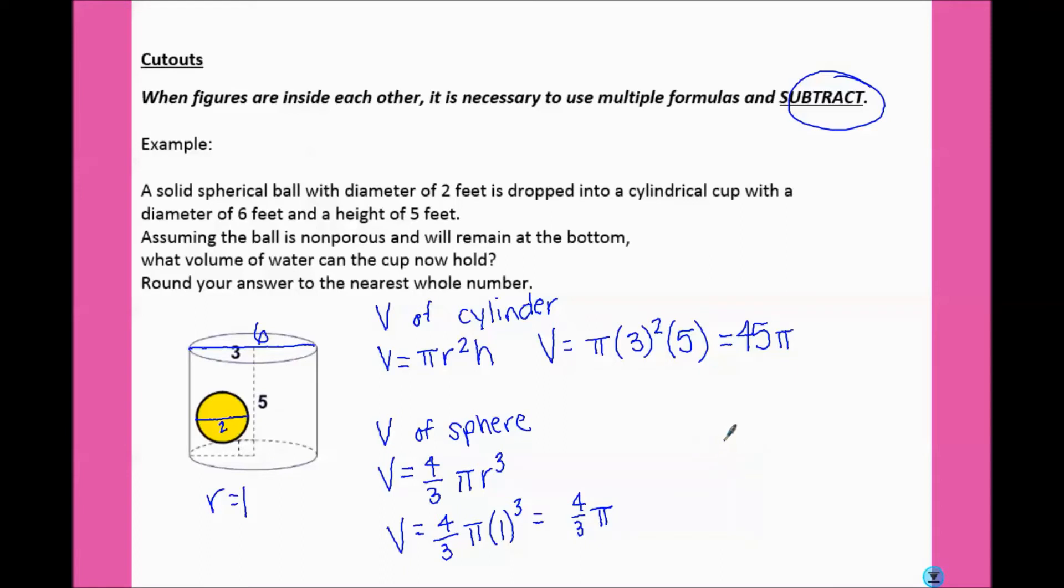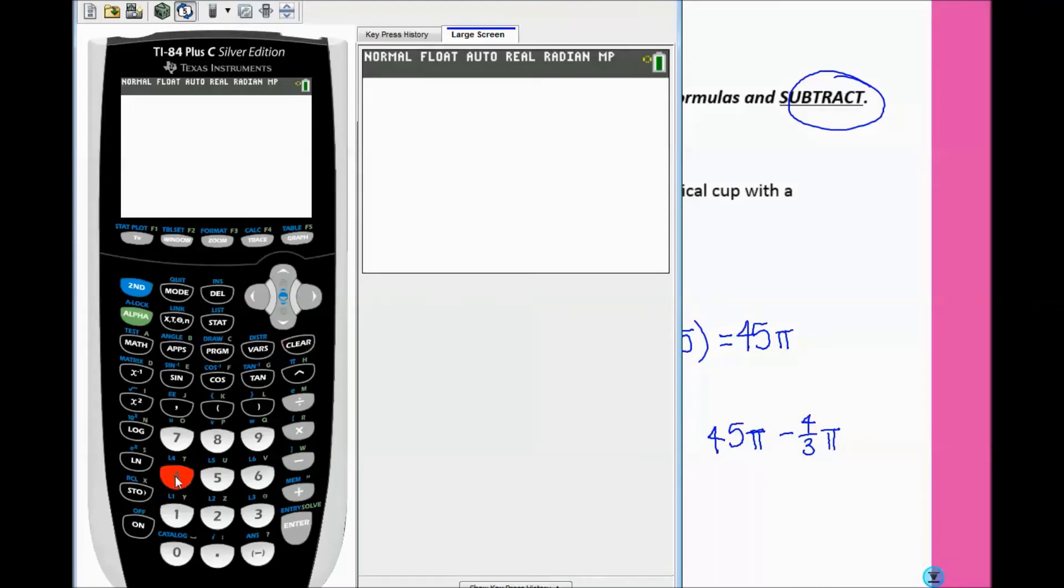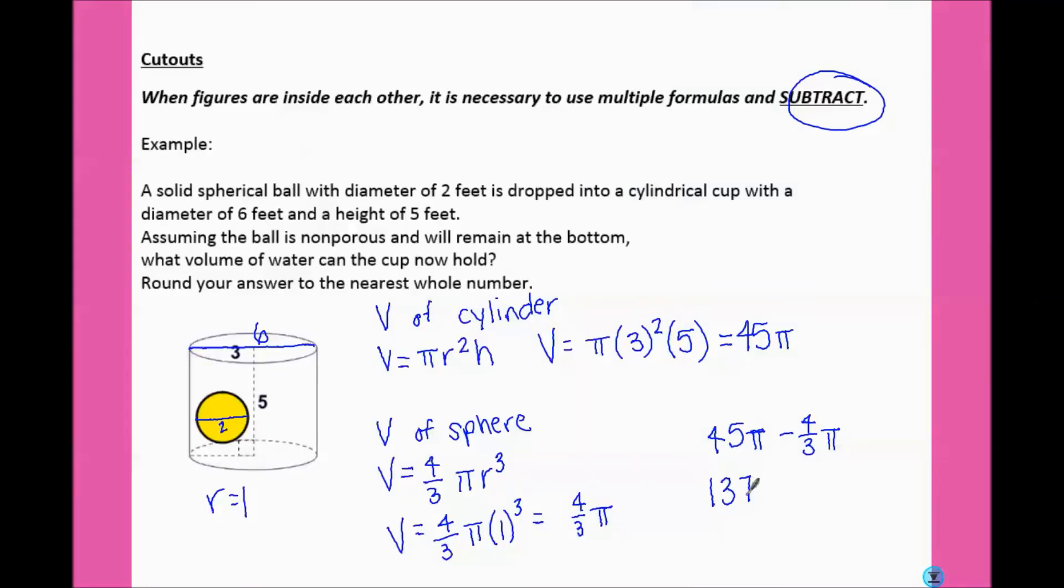So to find the total volume, or the new volume that's left, we would subtract them: 45 pi minus 4 thirds pi. If we type that in our calculator, we get that the volume is 137, because it says round to the nearest whole number, and our units would be feet cubed.